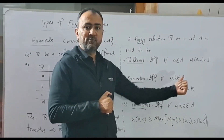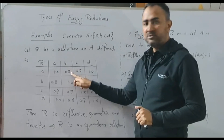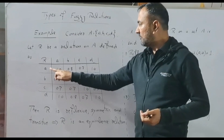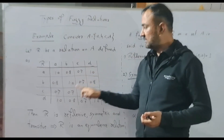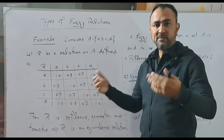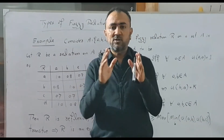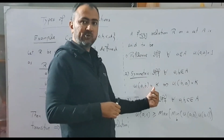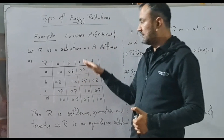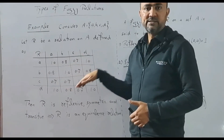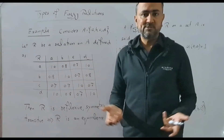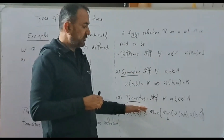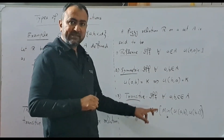For symmetry, we need μ(a, b) = k to imply μ(b, a) = k. Checking: μ(A,B) = 0.8 and μ(B,A) = 0.8; μ(A,C) = 0.7 and μ(C,A) = 0.7. Similarly checking all pairs, whenever μ(a, b) = k then μ(b, a) = k. So this relation satisfies the condition for symmetry and is therefore symmetric.